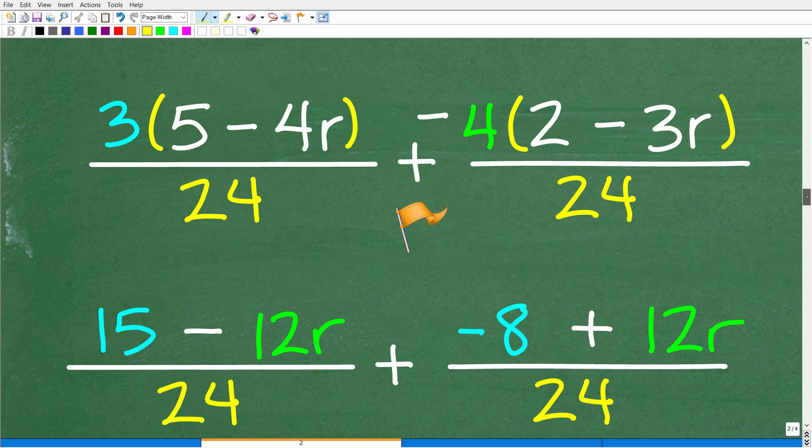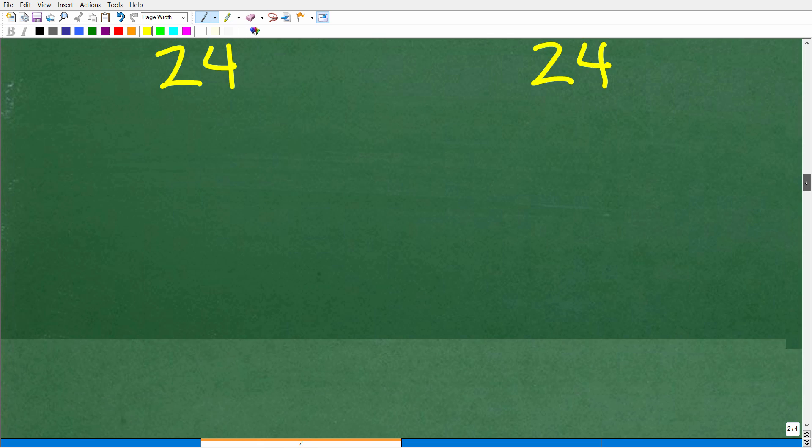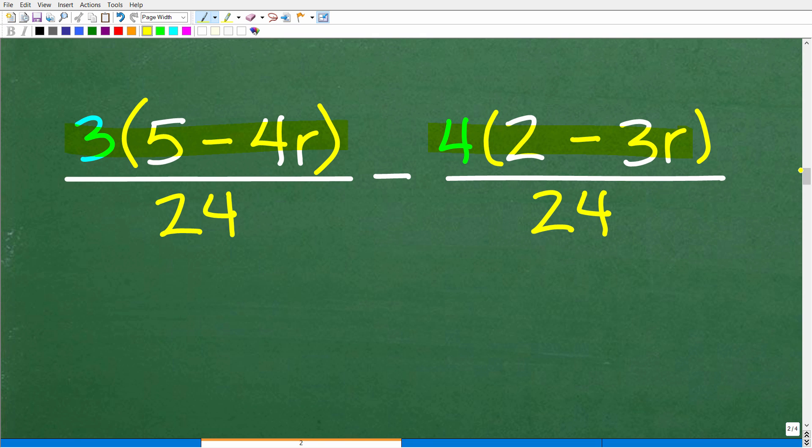And this is the next super common error. Matter of fact, it's so common that I put in a little flag so you can remember how to avoid this next error. Now, notice that we need to apply the distributive property. In other words, we're going to take this three and multiply by five and take this three and multiply by this negative 4R. Then we're going to take this four and multiply by two and this four by this negative 3R. But here is something that really gets students in a lot of trouble.